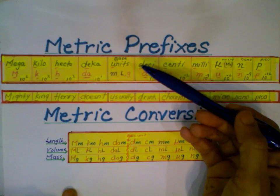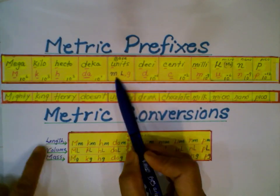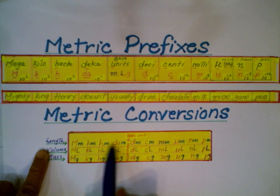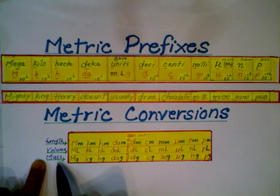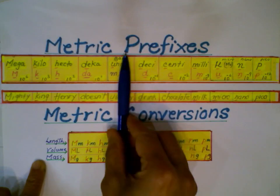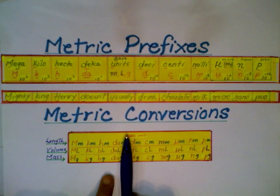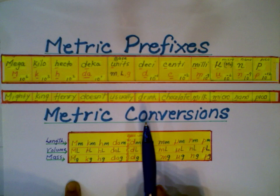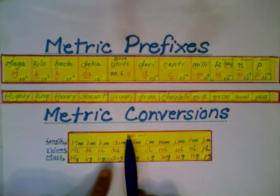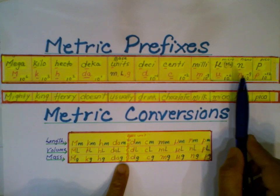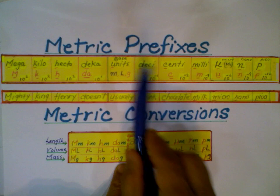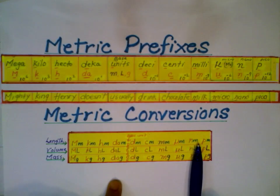In the middle you have the base units: meter for length, liter for volume, and grams for mass. To the left of the base unit, prefixes with positive powers create measurements bigger than the base unit. To the right, prefixes with negative powers create measurements smaller than the base unit.